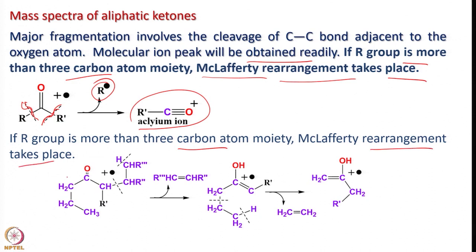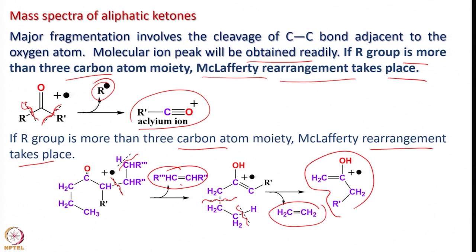Consider this aliphatic ketone: cleavage can happen here or here, leading to the elimination of an ethylene group. The next step is again cleavage, which leads to another ethylene and a substituted one. This results in the formation of an unsaturated alcohol radical cation. This is the McLafferty rearrangement — another possibility, provided we have a group with more than 3 carbon atoms. Otherwise, in simple cases with 2 or fewer carbon atoms on either side of the carbonyl group, acylium ion formation takes place in aliphatic ketones.